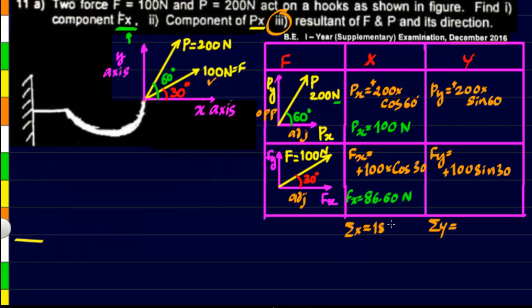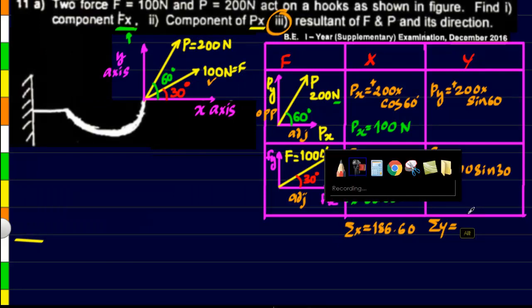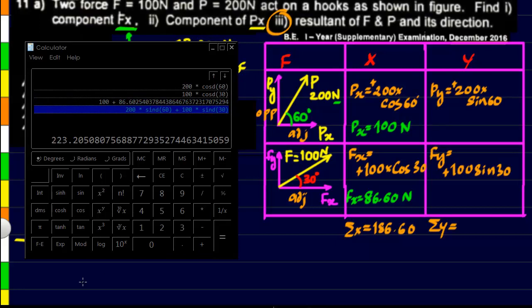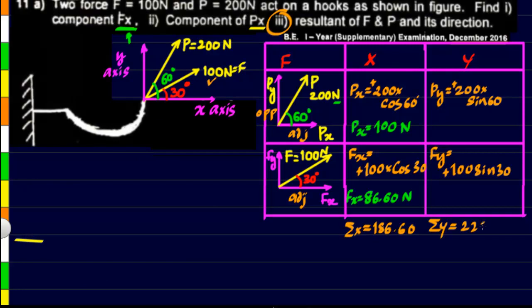The result we are getting is 186.60. And then we will have to find the y component. So for that we will have to take 200 into sin of 60 and add it to 100 into sin 30. So that gives us 223.21. So these are the sums of x and y components.